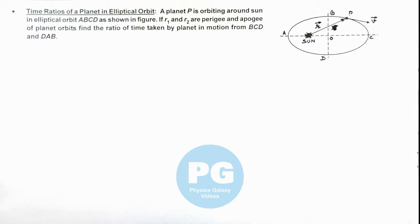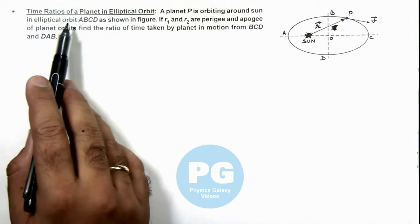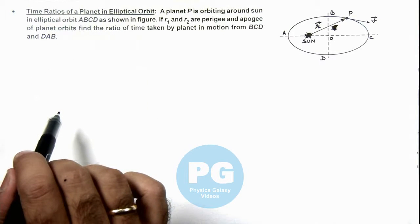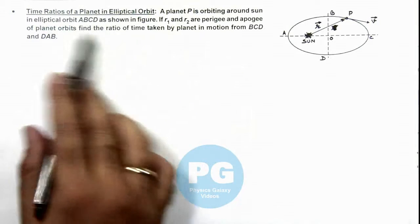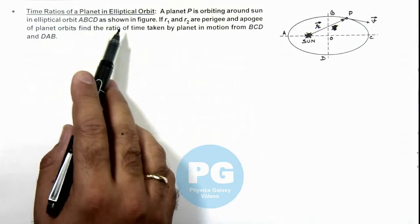In this illustration, we'll discuss the time ratios of a planet in elliptical orbit. We are given that a planet P is orbiting round the sun in elliptical orbit ABCD as shown in the figure.